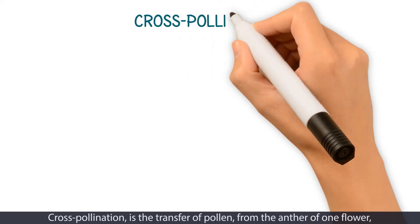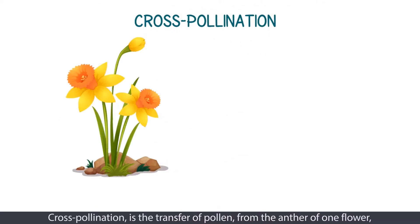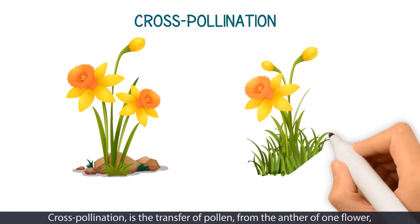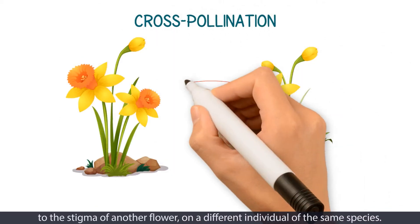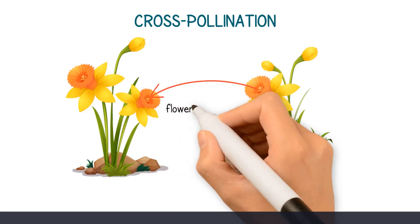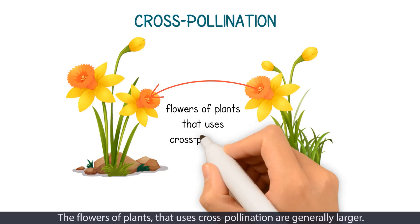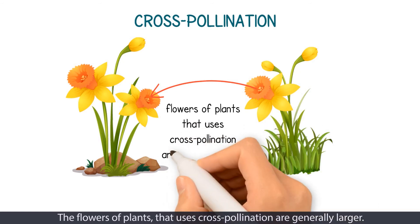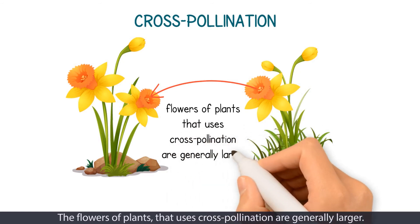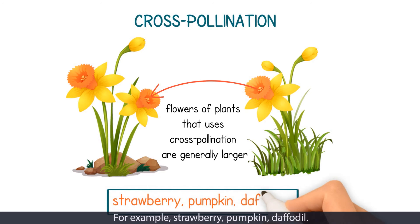Cross-pollination is the transfer of pollen from the anther of one flower to the stigma of another flower on a different individual of the same species. The flowers of plants that use cross-pollination are generally larger. For example, strawberry, pumpkin, daffodil.